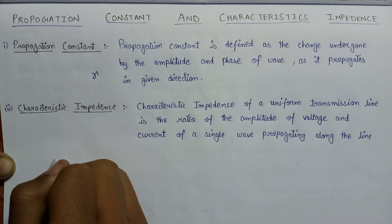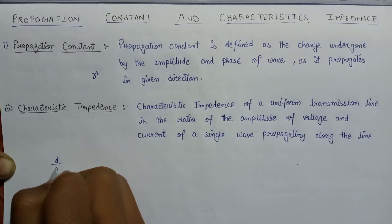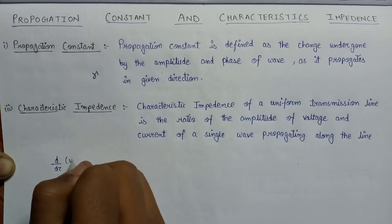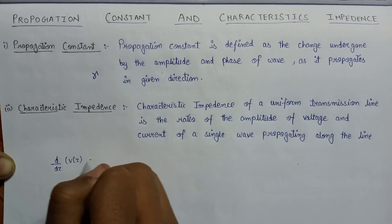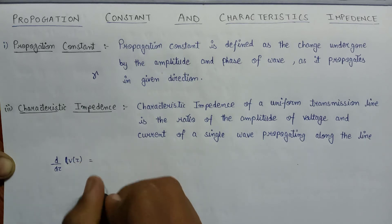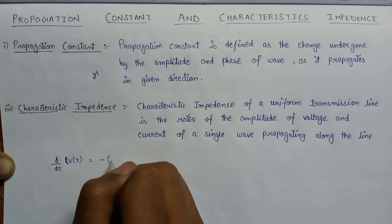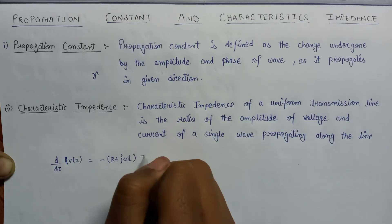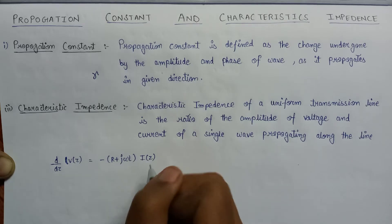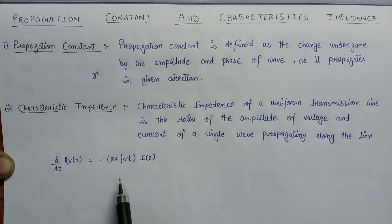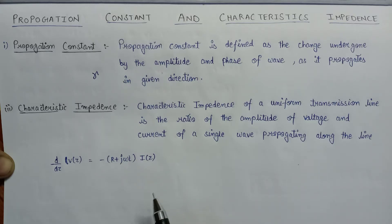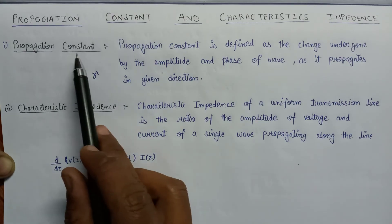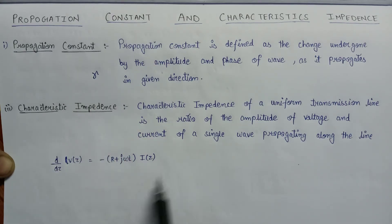We are dealing with the equation: d/dz of V(z) equals minus (R + jωL) times I(z). This is the equation derived in the derivation of voltage and current. We will now derive the expressions for characteristic impedance and propagation constant based on this equation.